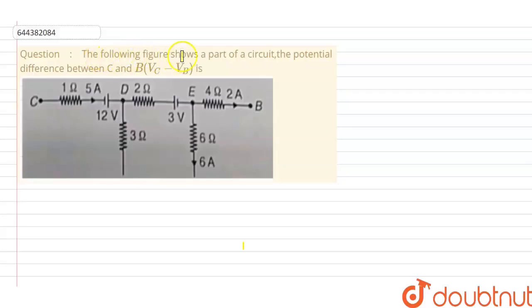The following figure shows a part of a circuit, the potential difference between C and B, Vc minus Vb. We can see in this given part of a circuit, incoming current is 5 ampere and outgoing current is 2 ampere, and current in this branch is 6 ampere which is outgoing.